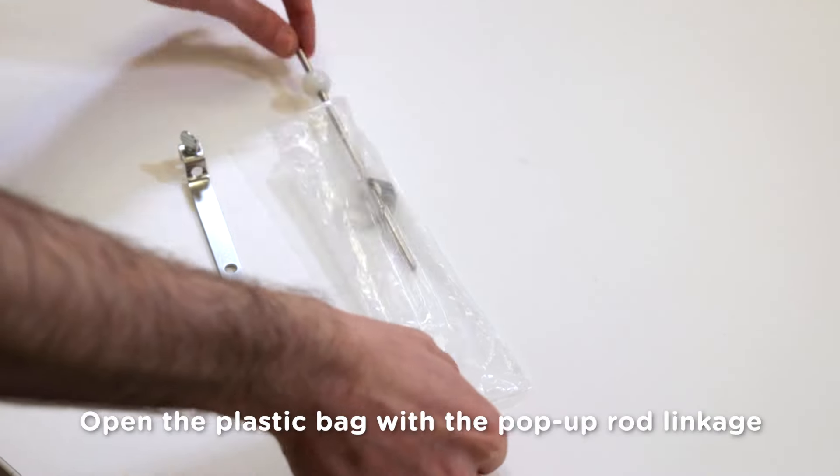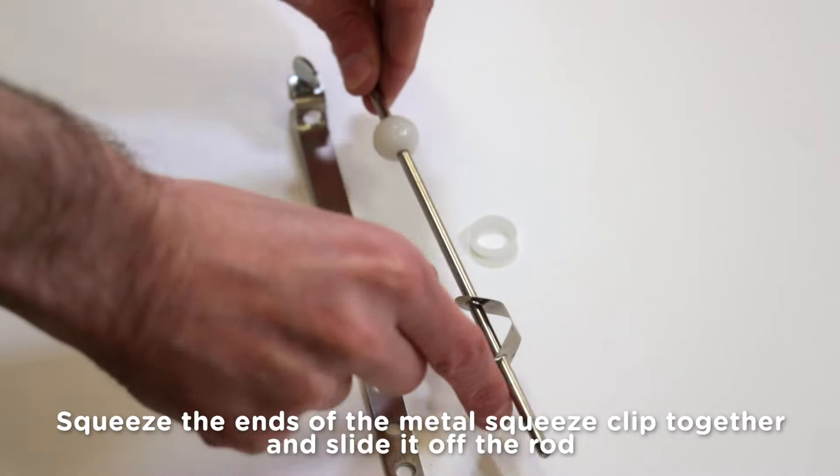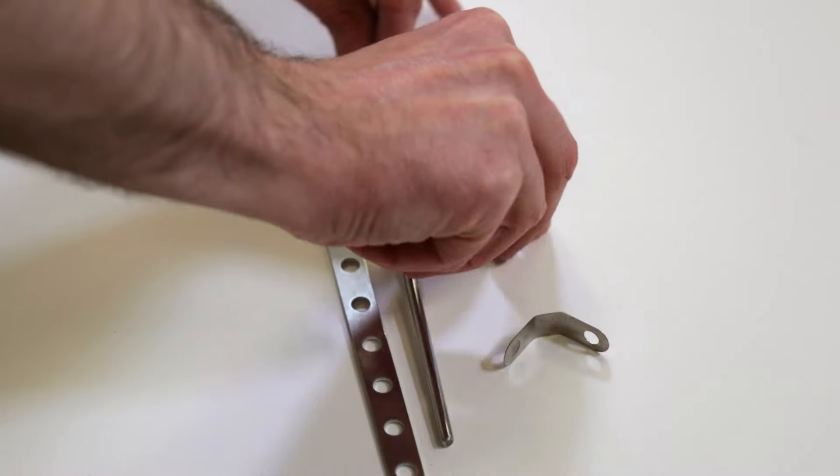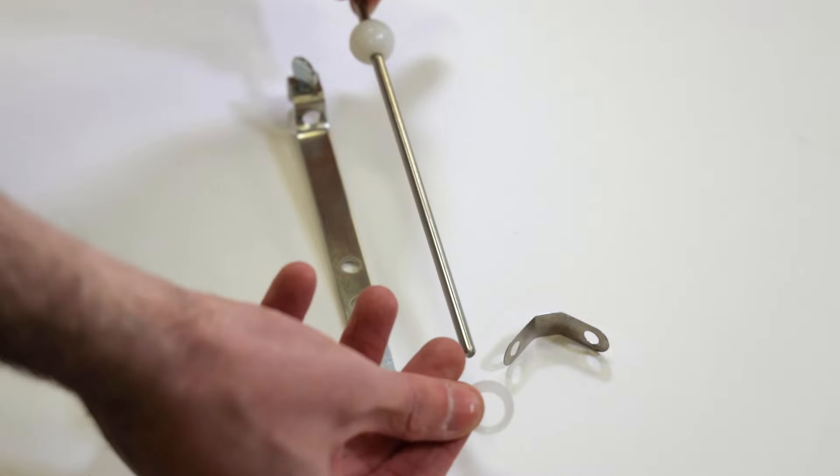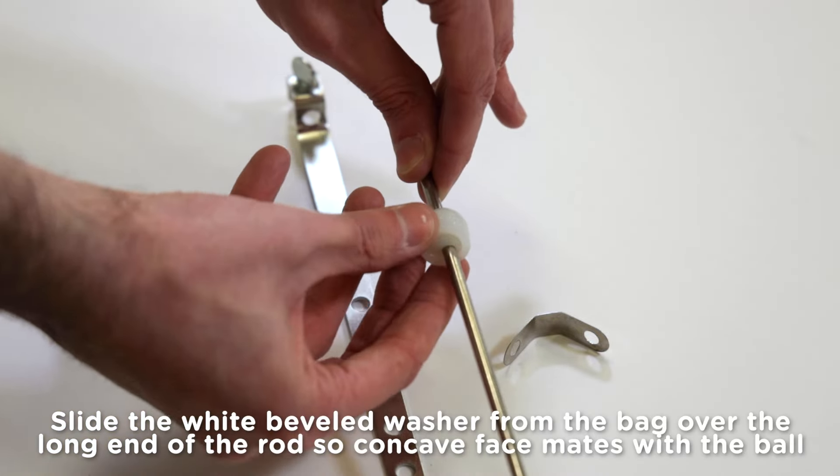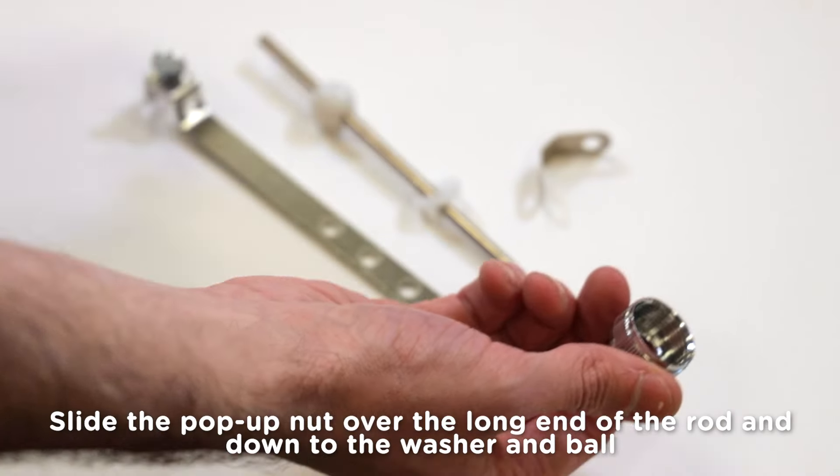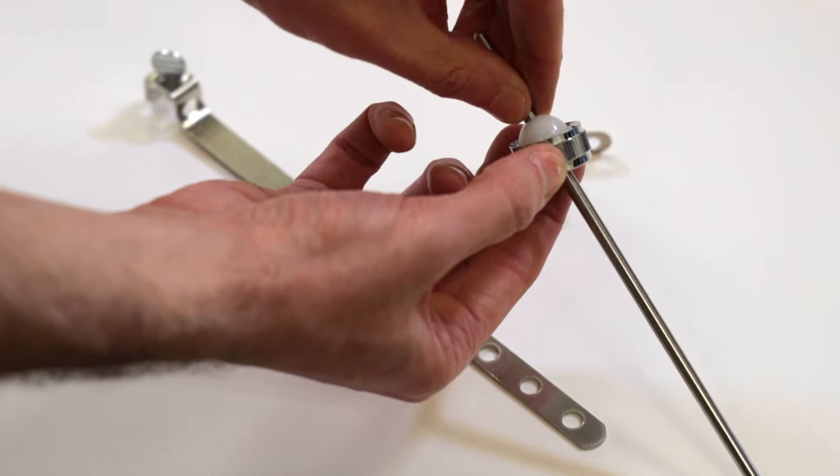Open the plastic bag that has the pop-up rod linkage inside. You'll notice the pop-up rod with the ball on it has a metal squeeze clip on it. Squeeze the ends together and slide the clip off the rod. In the plastic bag, there's also another white beveled washer, exactly like the one that's inside the drain assembly. Slide that washer over the long end of the rod so the concave face mates with the ball. Now slide the pop-up nut over the long end of the rod and slide it down to the washer and ball.